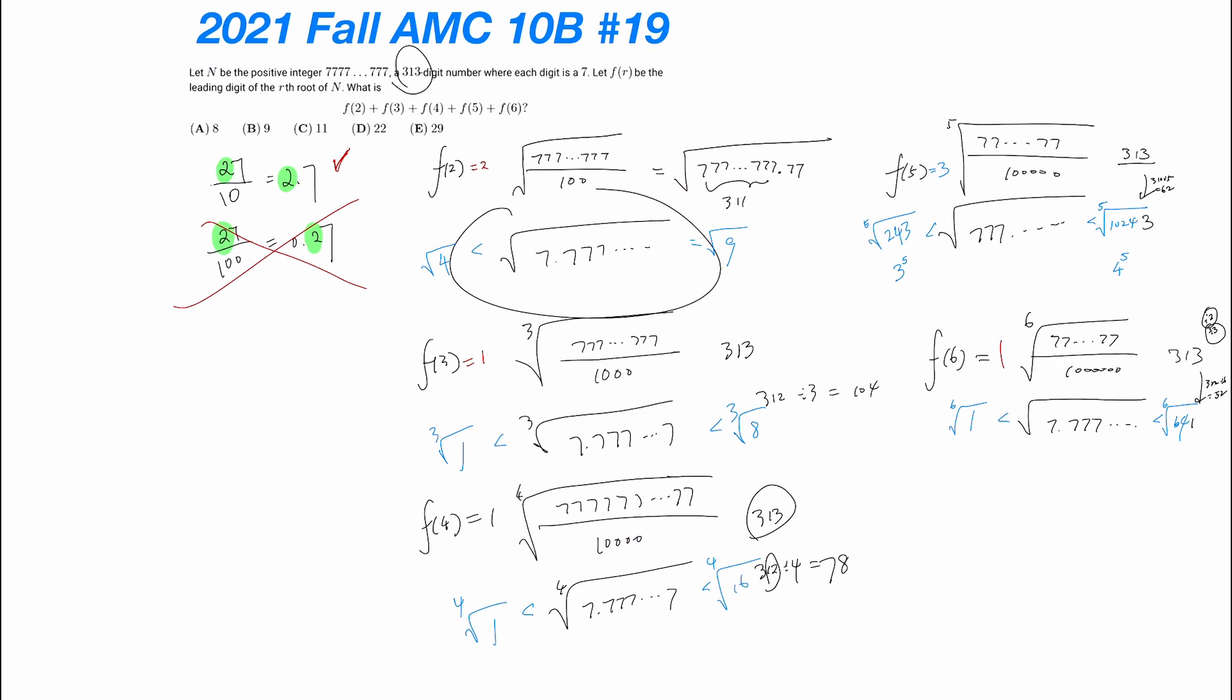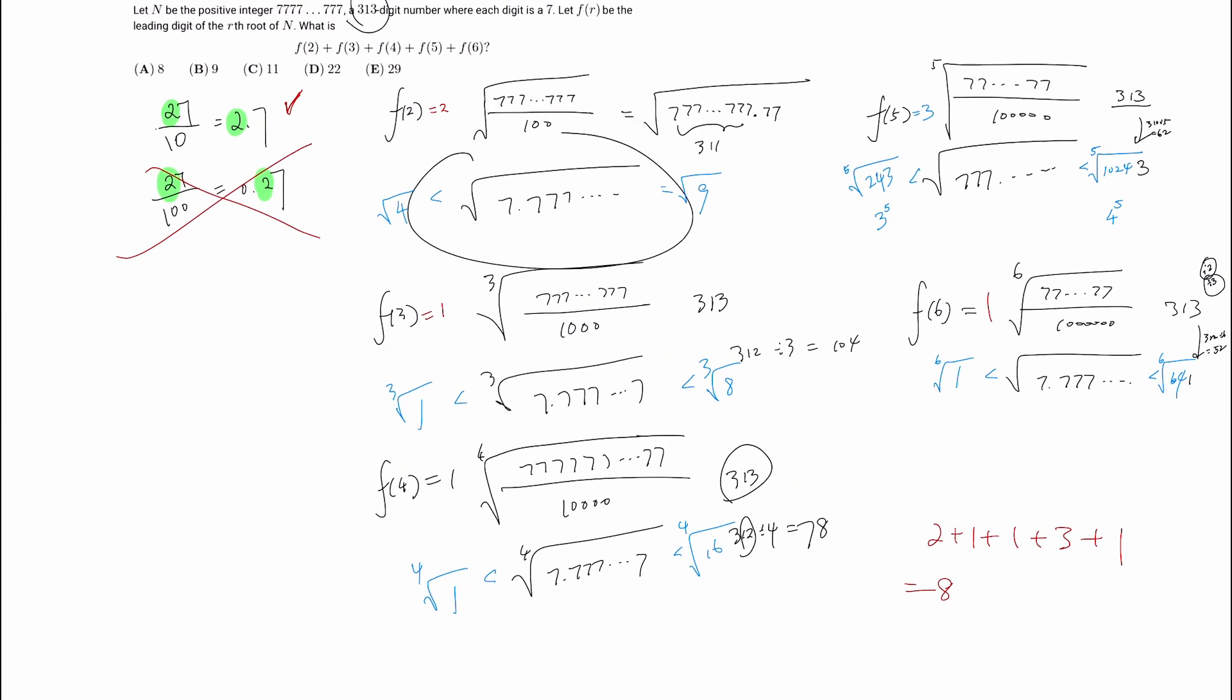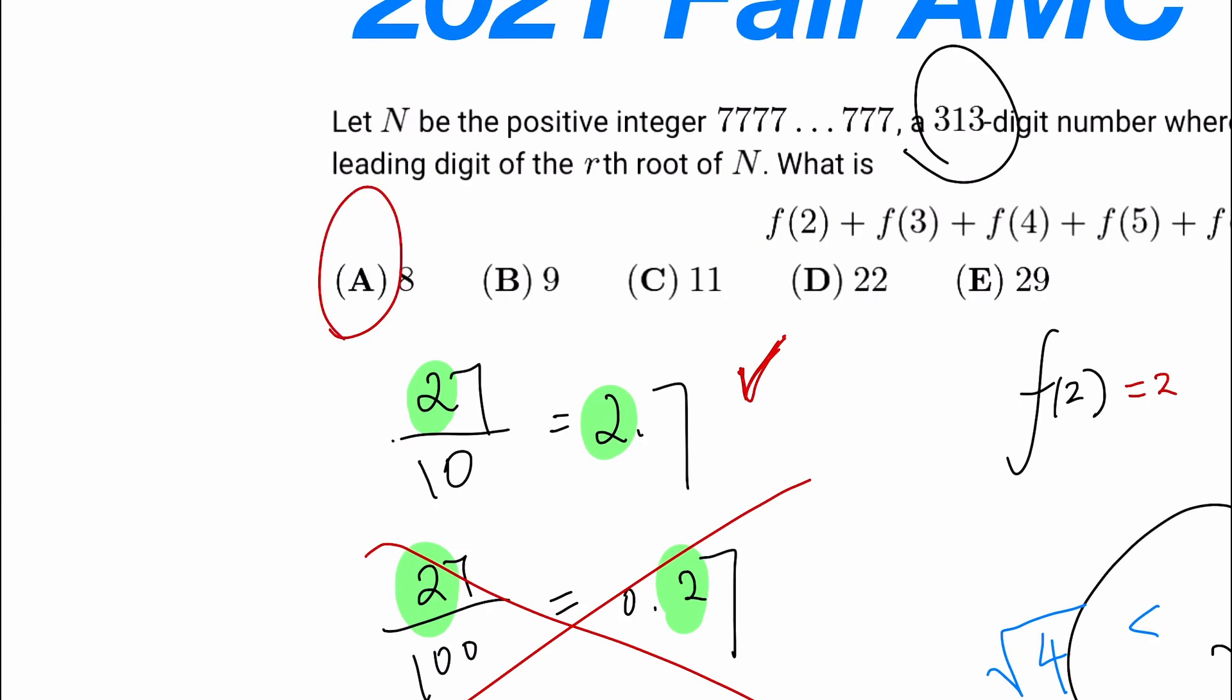Now we just have to sum up all of these numbers. f(2) is 2 plus 1 plus 1 plus 3 plus 1, and that gives us 8, which is our answer choice A.